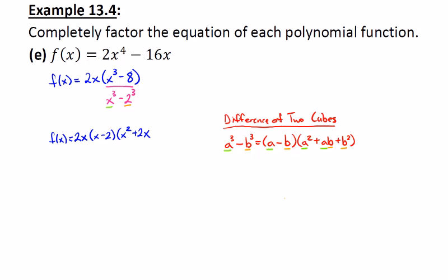And then finally, I have plus b squared. So I need to take 2 and square it to get 4. And this gives us the factored form for f.